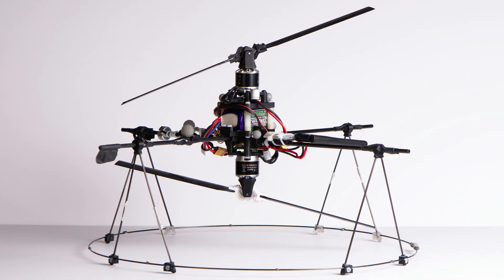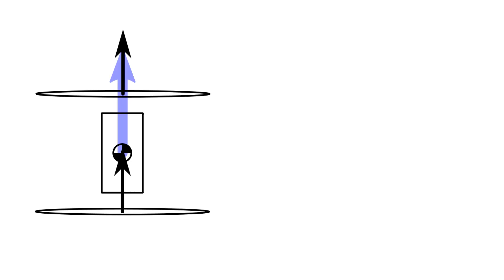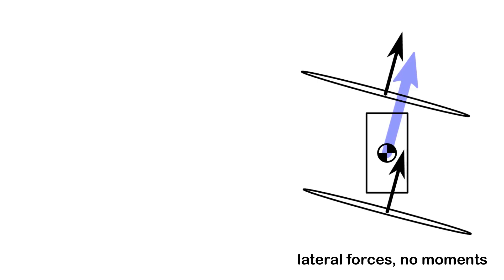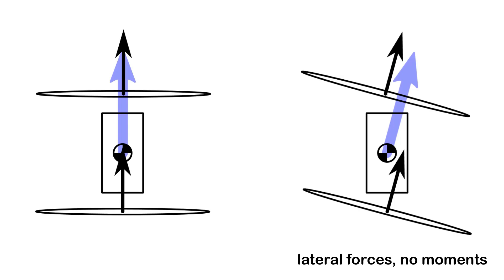The top and bottom rotors of a coaxial helicopter now give us control over two independent thrust vectors. We generate lateral forces by tilting both rotors together. This allows us to follow trajectories through space while remaining perfectly level.